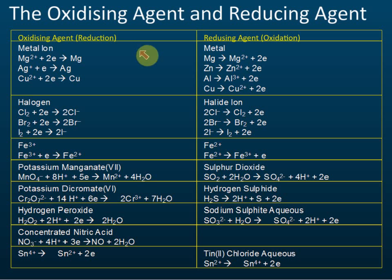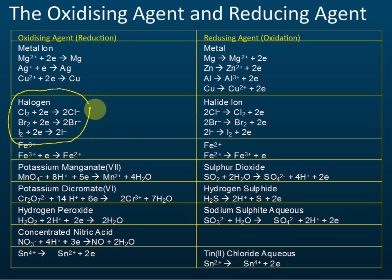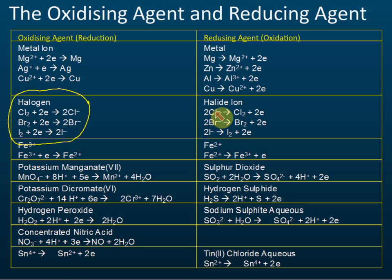The first group that always comes out is halogens. Always remember: halogens are oxidizing agents. Since halogens are oxidizing agents, then halides will act as reducing agents, because halogens receive electrons to form halides, and halides release electrons to form halogens again.